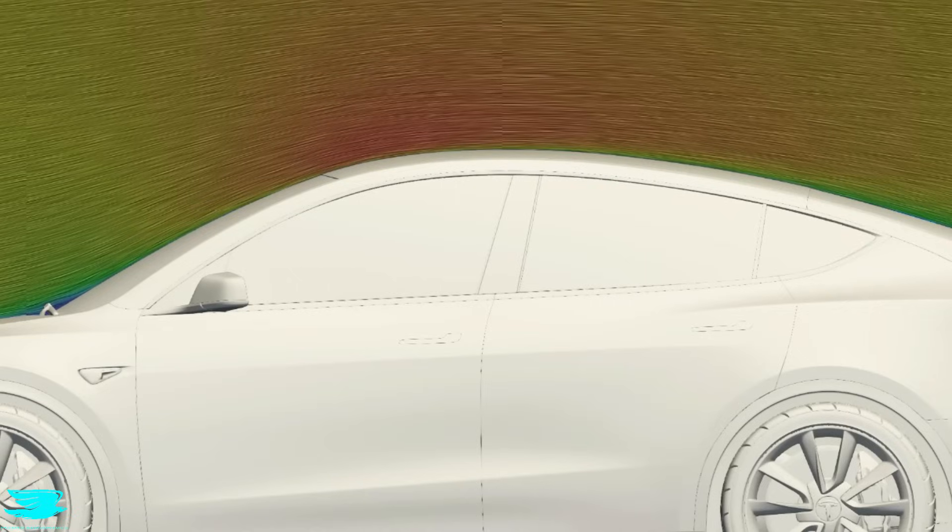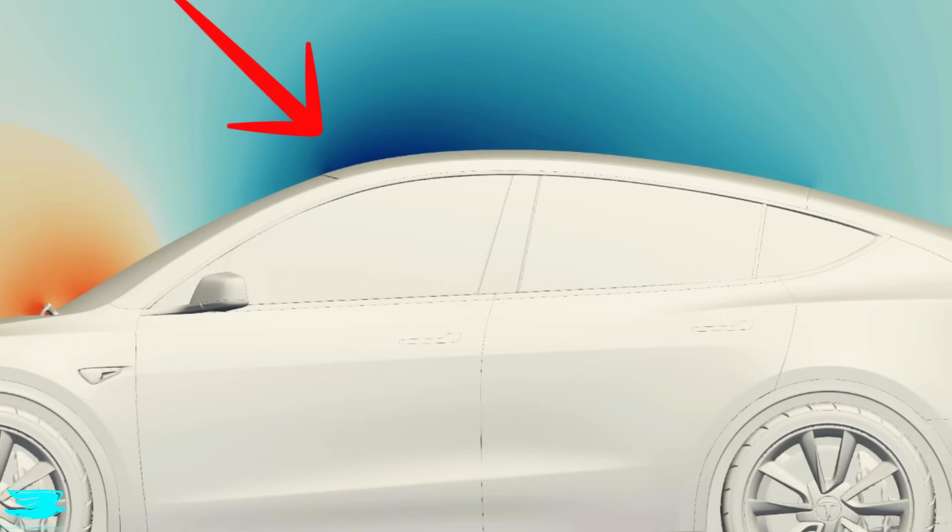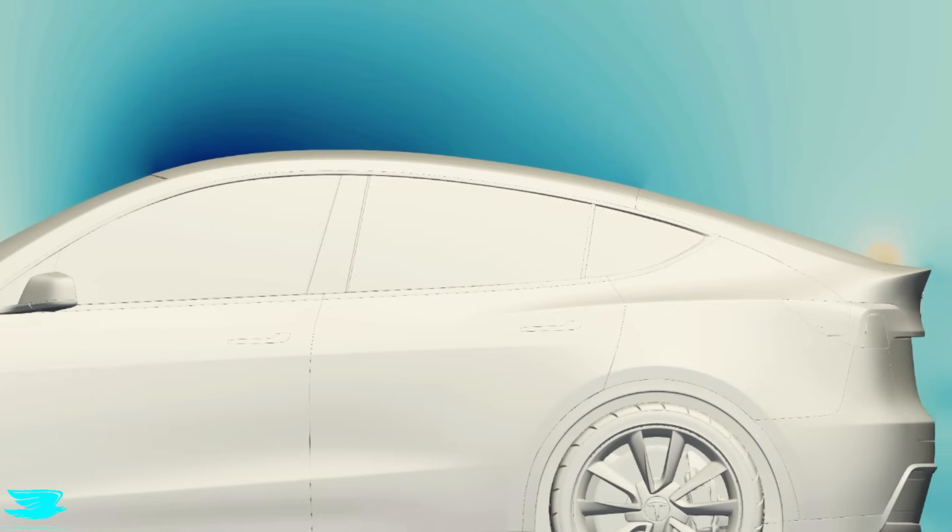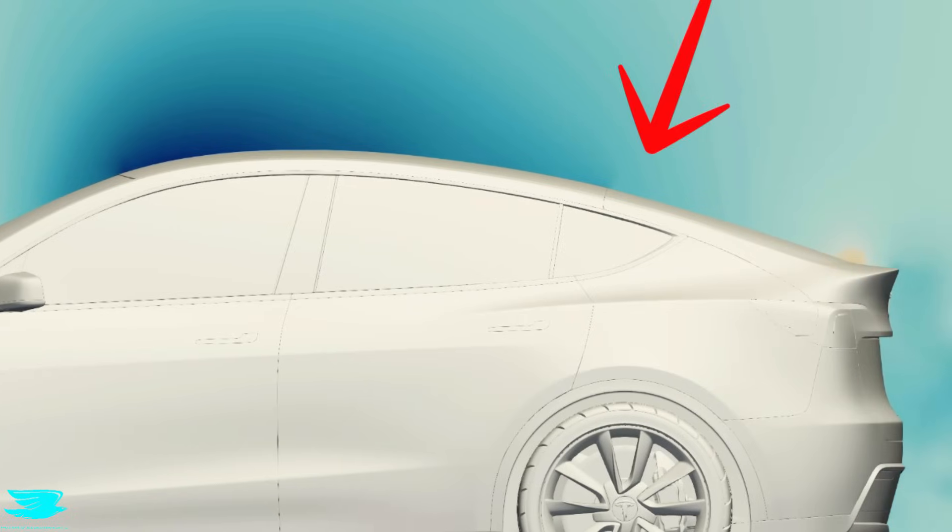But if we move to the roof, we now see where the problem lies. Looking first at the velocity, see how red it becomes. That means that the flow has accelerated a lot. And as a result, the pressure drops dramatically. That low pressure is lifting the car up. And things don't get much better over the rear window either. So this region is definitely the problem. This is where the lift is being created. Knowing that, how can you fix it though?